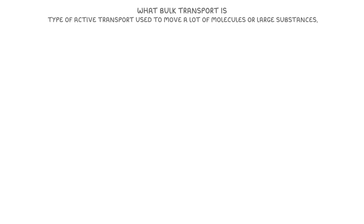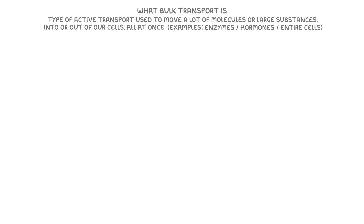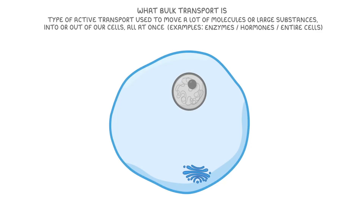Bulk transport is a type of active transport used to move a lot of molecules or large substances into or out of our cells all at once. Some examples of things moved by bulk transport are enzymes, hormones, and sometimes even entire cells like bacterial cells that need breaking down. The two main types of bulk transport are endocytosis and exocytosis.